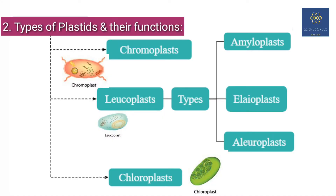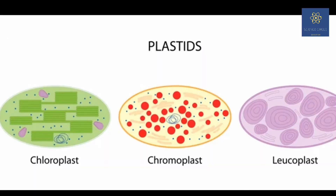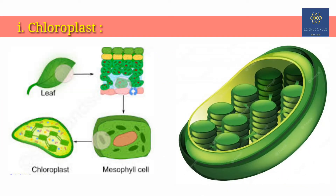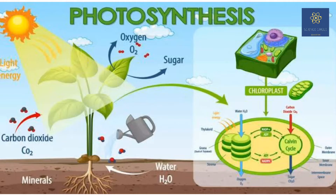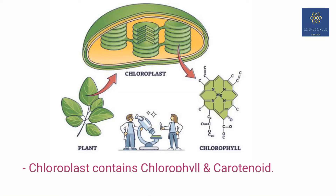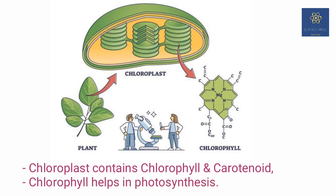Based on the type of pigments a plastid contains, we differentiate them into three main categories: chloroplast, chromoplast, and leucoplast. Chloroplasts are biconvex shaped, semi-porous double membrane cell organelles which are found in the mesophyll of a plant cell. They are the basic sites for synthesizing food during the process of photosynthesis. They contain chlorophyll and carotenoid pigments which are responsible for trapping light energy essential for photosynthesis.